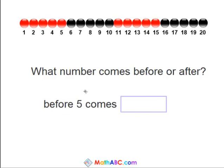Okay, so now we're going to do before. Before 5 comes blank. So 5 is right here. So the number before 5 is 4. So before 5 comes 4.